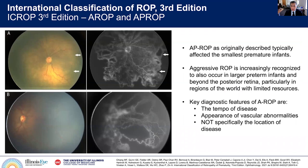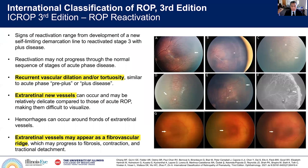When thinking about aggressive posterior ROP, as originally described, this would typically affect the smallest and most premature infants. But we can see aggressive disease in older and heavier babies in certain areas of the world. So we agreed on calling this aggressive ROP, with the diagnostic features being the tempo of disease and the appearance of the vascular abnormalities, and not specifically tying this to location of disease.